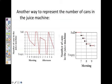Another way to represent the number of cans in the juice machine is by using a piecewise function. Here's just another way to represent this information. We'll take a look at piecewise later on this year.